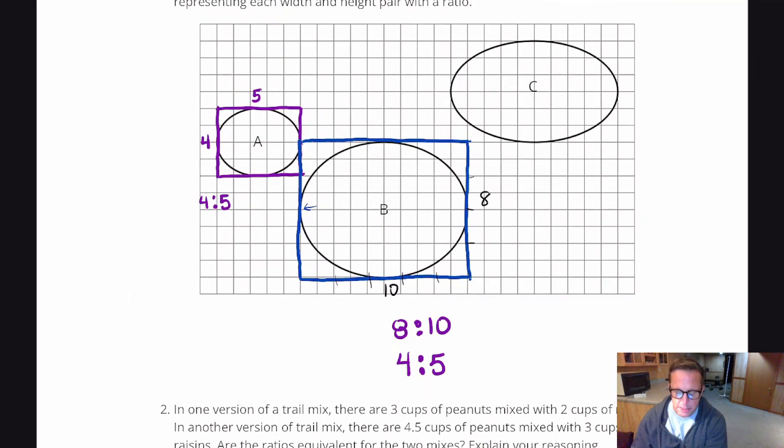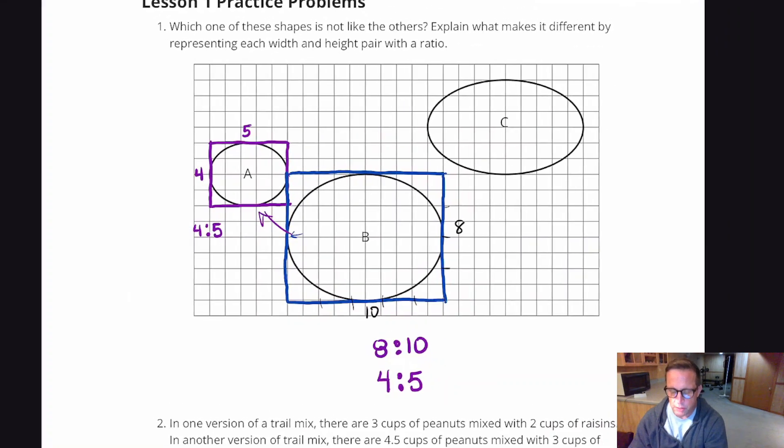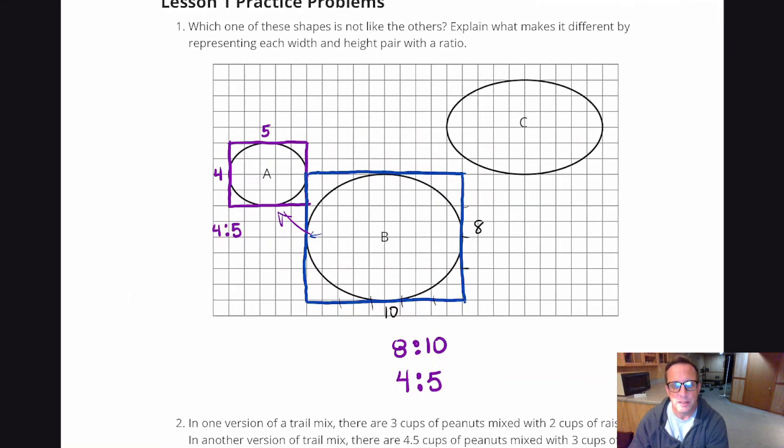So A and B definitely are a pair. Those definitely belong. So it's probably C, but let's confirm it. Let's confirm why C.